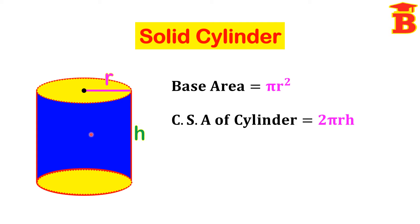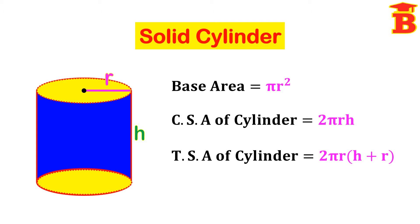The curved surface area is the blue color shaded portion. The total surface area (TSA) of the cylinder is 2 pi R into (H plus R). The total surface area is the blue color shaded portion plus the yellow color shaded portion — that is CSA plus top and bottom.